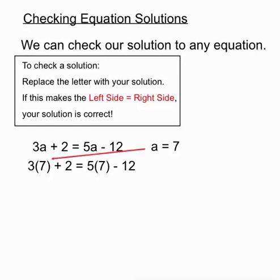So we've subbed in a equals 7. We put a 7 instead of the a in the 3a there. And on the right hand side, we put a 7 instead of the a.